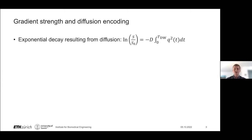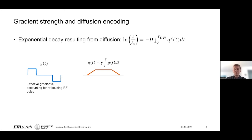To explain how exactly gradient strength benefits diffusion encoding, I have here a general equation for exponential decay resulting from the application of diffusion gradients. The logarithm of the diffusion-weighted signal relative to the unweighted signal equals minus D, the diffusivity, times the integral over the diffusion encoding duration of q²(t). Notably, q(t) equals gamma times the integral of the gradient — equivalent to the definition for k(t) — and is the formalism used for gradient encoding done for the purpose of diffusion. I also show an example pulse gradient sequence, using effective gradients that account for the 180-degree RF pulse, along with the trapezoidal q(t) waveform.